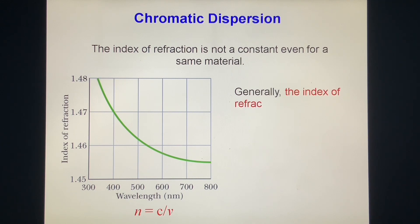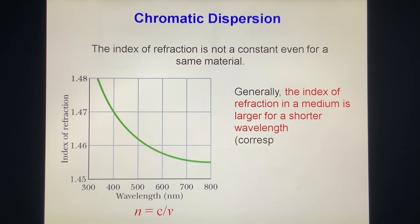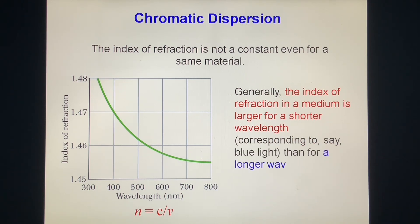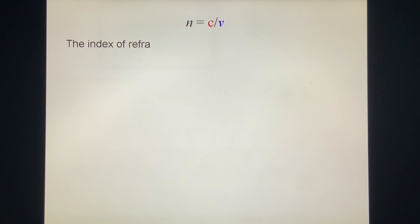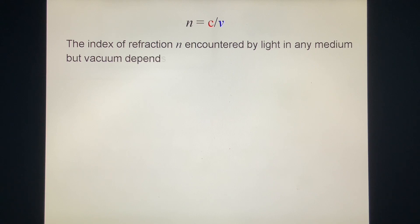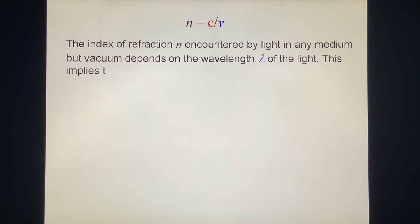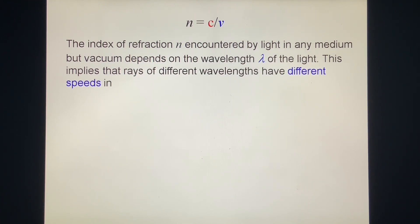Generally, the index of refraction in a medium is larger for a shorter wavelength, corresponding to blue light, than for a longer wavelength, such as red light. The index of refraction n encountered by light in any medium but vacuum depends on the wavelength of the light. This implies that rays of different wavelengths have different speeds in a given medium, because n relates to v.